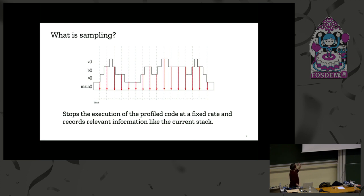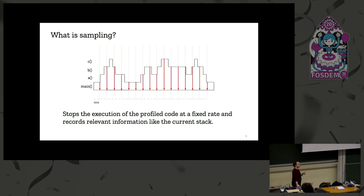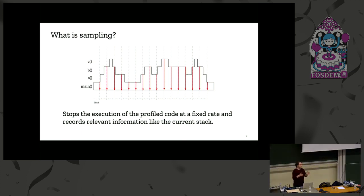In this graph you can see a simple program. The vertical lines are the profiler samples and the straight lines are program execution. Main calls A, calls B, calls C. On the first peak — the first C call — the profiler actually missed it, because C runs in less than one millisecond and falls between two sampling times. But on the second peak, the second C call, we managed to capture it. So sampling gets all stack information at interval times.